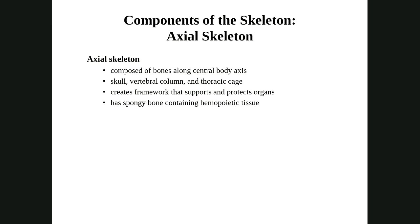Let's talk about the skeleton. There are two parts: the appendicular skeleton and the axial skeleton. We're going to start with the axial skeleton. That's going to be the midline portion of your body — your skull, your vertebral column, and your thoracic cage, which includes your ribs and sternum.